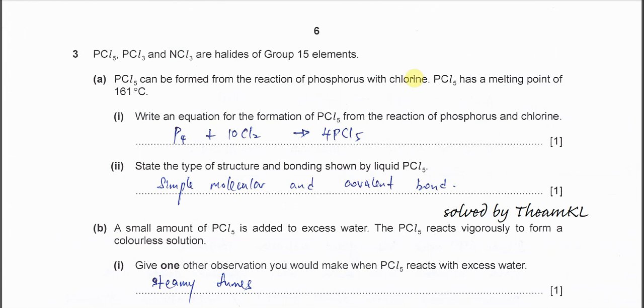Question 3. PCl5, PCl3, and NCl3 are halides of group 15 elements. Part A. PCl5 can be formed from the reaction of phosphorus with chlorine, and PCl5 has a melting point of 161 degrees C.